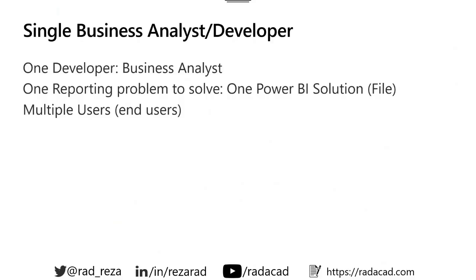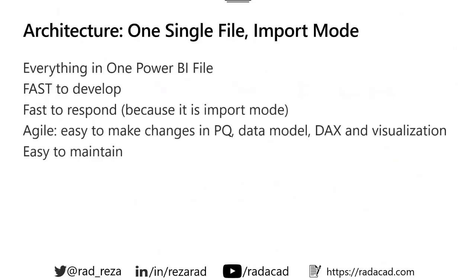In that scenario, usually we want the solution to be something very agile. That person wants to get data from different places, do data transformation, do the relationships between tables, data modeling, add some calculations and analytics, visualize it, and then publish and share it with others. This should be a very fast and agile process. Usually we work with one file — everything in one file — and that is how Power BI is built in general. You build everything within one file, publish it, and it works perfectly — easy to maintain, easy to control.